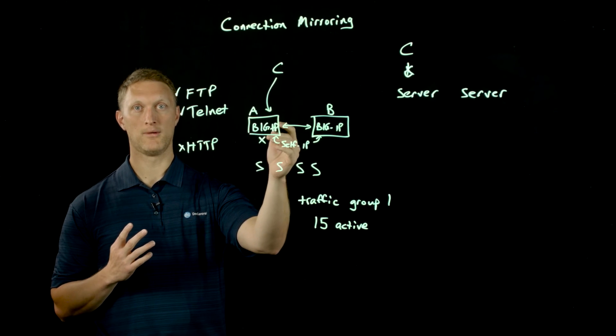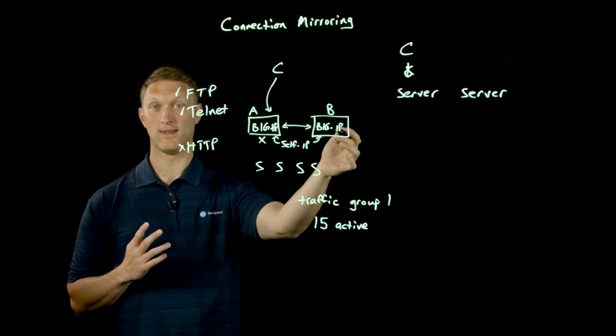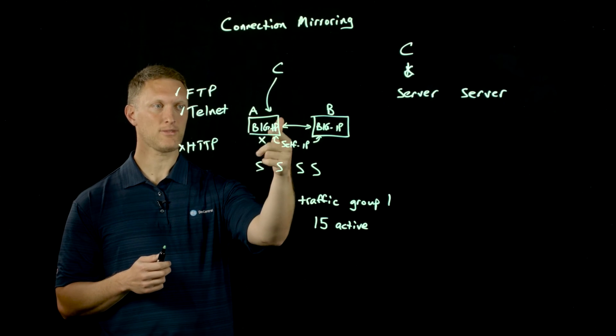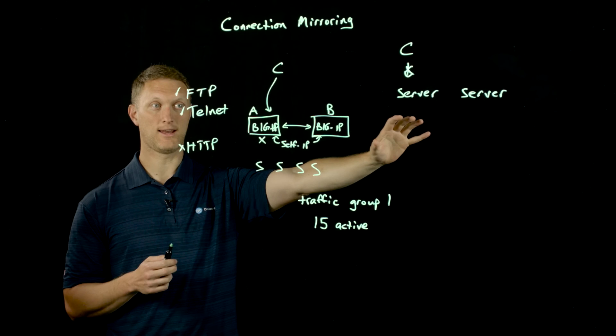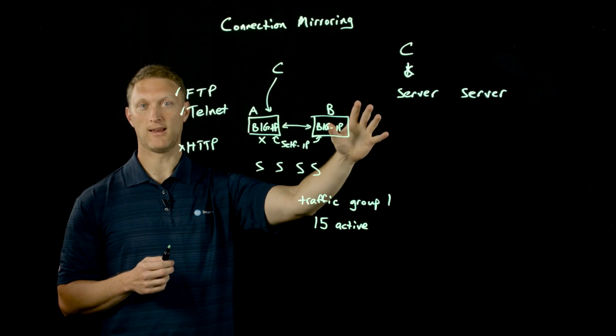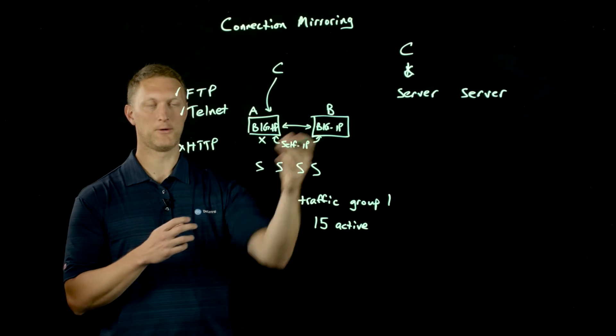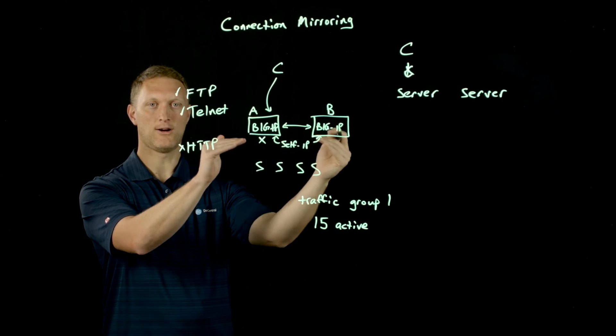One other note I'll make about the BIG-IP system itself is that the hardware platform has to be identical between one BIG-IP and the next. If you think about it, that kind of makes sense. Let's say this is a higher end BIG-IP hardware system and you're going to hand all of the connection and persistence data to maybe a lower end BIG-IP hardware system, then this lower end is like, 'Hey, I can't handle all that stuff.' So they have to be identical hardware platforms.